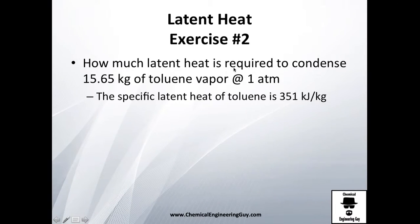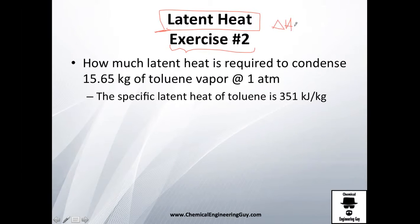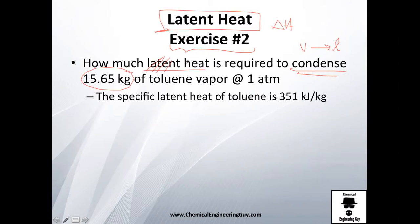Let's continue with this problem. We've seen exercise number one of latent heat. It's very important you get the idea of what is latent heat, or change in enthalpy for a change of phase. They tell you how much latent heat is required to condense — which means going from vapor to liquid — this amount of toluene: 15.65 kilograms of toluene vapor.